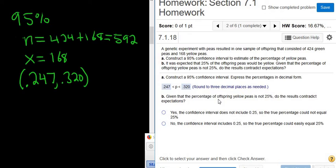It says, given that the percentage of offspring yellow peas is not 25%, do the results contradict expectations? Maybe we should read part B. It was expected that 25% of the peas would be yellow.